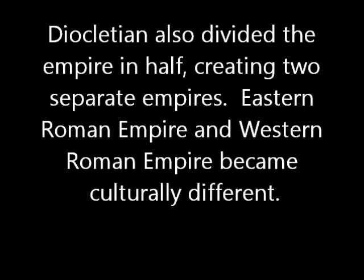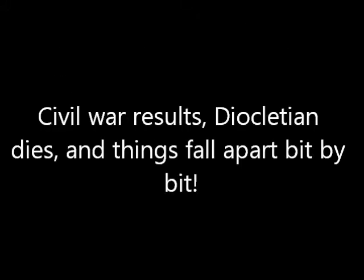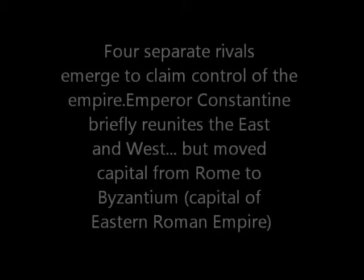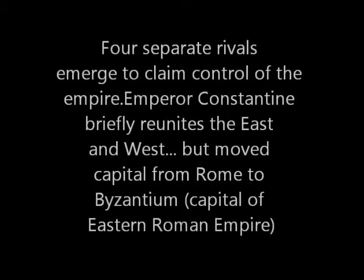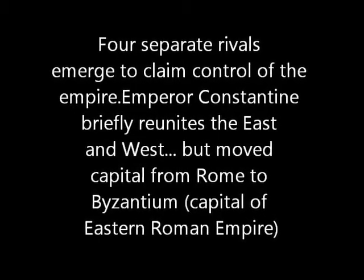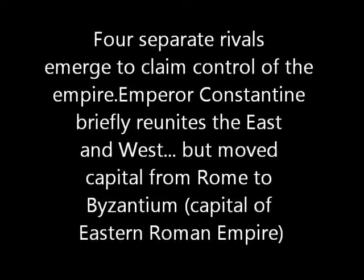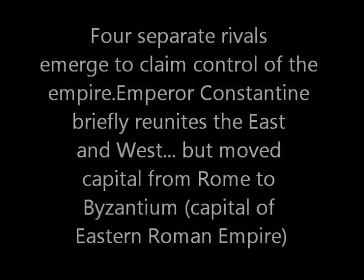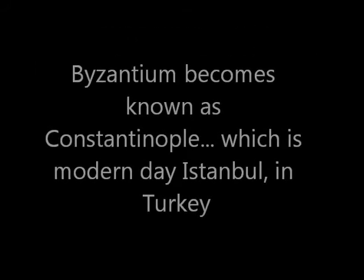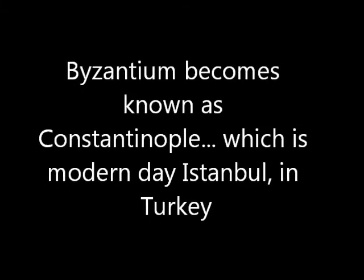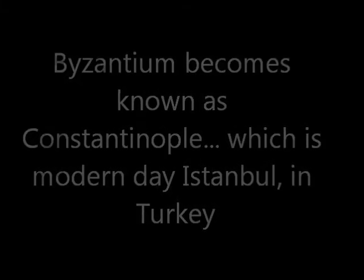Eventually, four separate rivals started to compete for control over the empire, including a guy named Constantine, who briefly united the eastern and western Roman empires. But then he made a mistake in that he moved the capital from Rome in the western empire to the capital of the eastern empire, which was Byzantium. This city later became known as Constantinople. Eventually the western empire fell apart, the eastern empire survived, and then turned into what we call the Byzantine Empire.